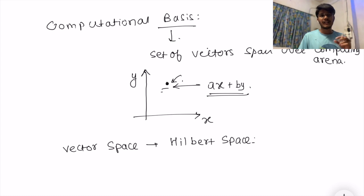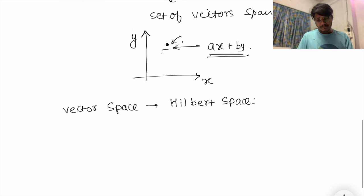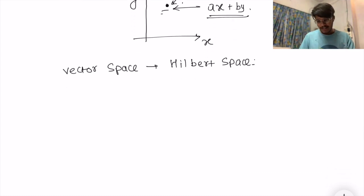We are using it to define any particular state in quantum computers. For example, in a 2D Hilbert space we have basis as these two ket vectors as zero and one. These are the basis of this particular Hilbert space. To represent any particular quantum state you can simply specify it using this form.